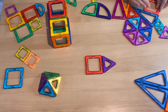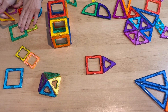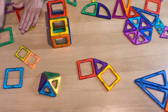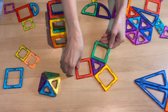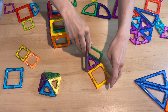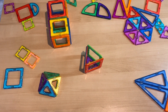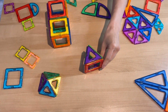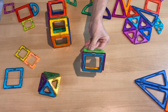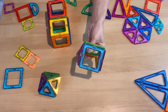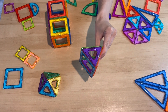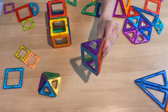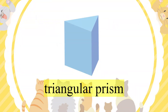Now, what about we combine some triangles with some squares? Now it becomes a triangular prism. Triangular prism. It looks like a tent.